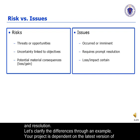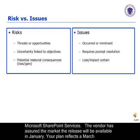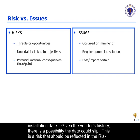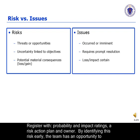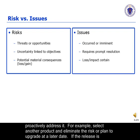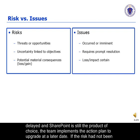Let's clarify the differences through an example. Your project is dependent on the latest version of Microsoft SharePoint services. The vendor has assured the market the release will be available in January. Your plan reflects a March installation date. Given the vendor's history, there is a possibility the date could slip. This is a risk that should be reflected in the risk register with probability and impact ratings, a risk action plan, and owner. By identifying this risk early, the team has the opportunity to proactively address it — for example, select another product and eliminate the risk, or plan to upgrade at a later date. If the release is delayed and SharePoint is still the product of choice, the team implements the action plan to upgrade at a later date.